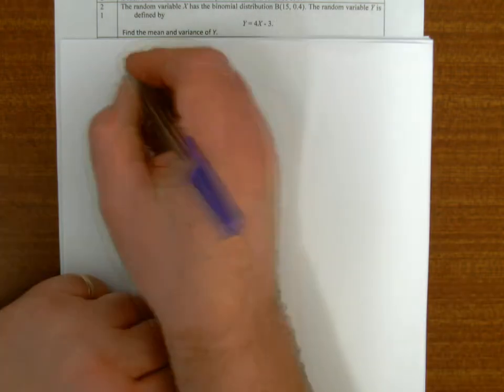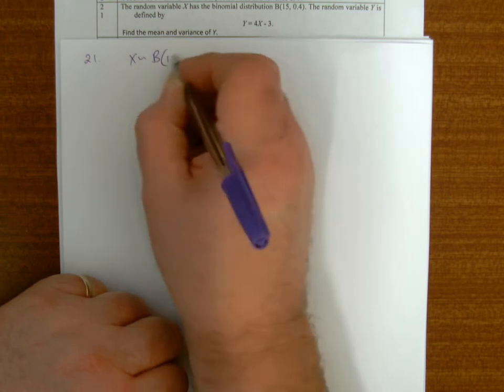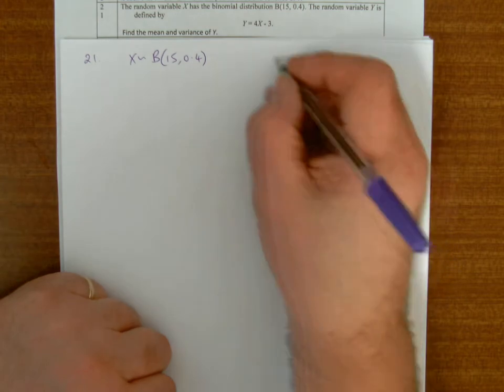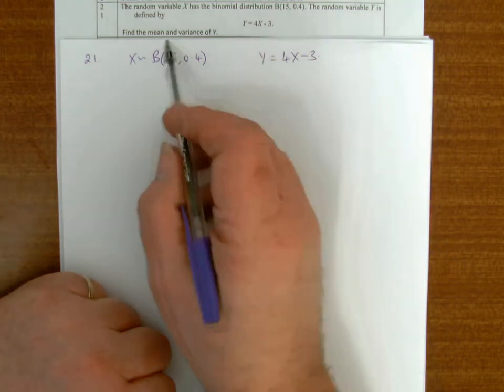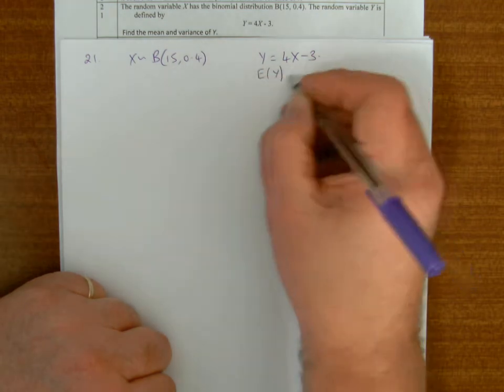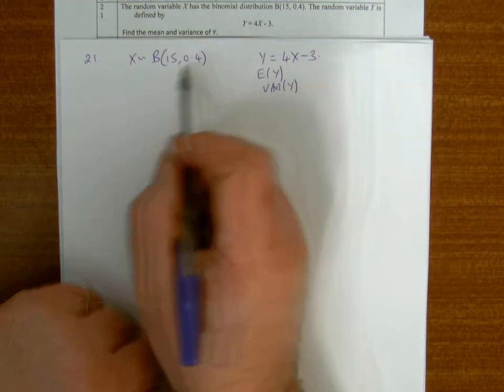X is a binomial with parameters 15 and 0.4, and I've got Y = 4X - 3. I want the mean and variance of Y, so I want E(Y) and Var(Y), but first of all I need to get the expected value of X and the variance of X.